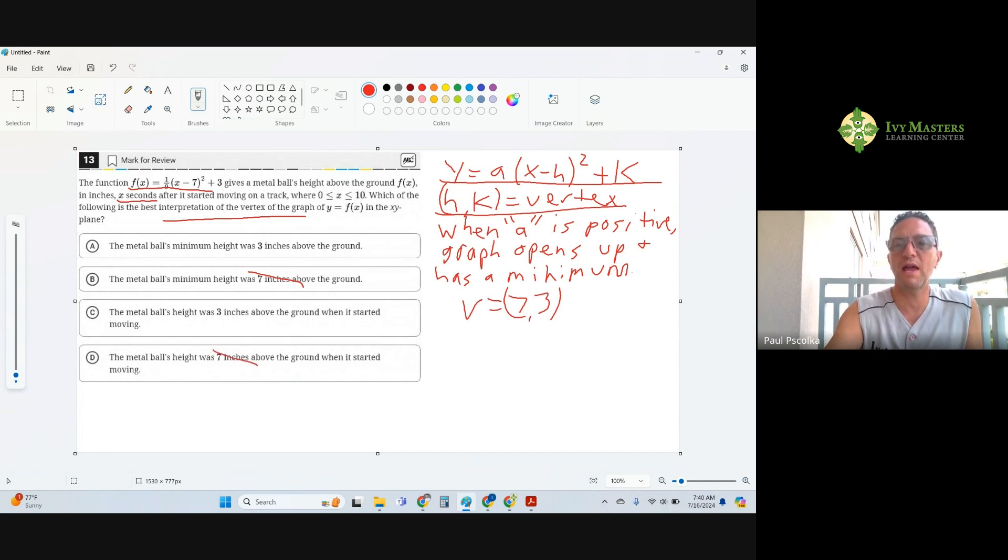When your a is positive here, then your parabola is going to open up like that and it's going to have a minimum.